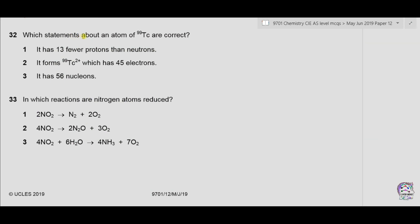Question 32. Which statements about an atom of technetium 99 are correct? The atomic number of technetium 99 from periodic table is 43. And the nucleon number is 99. Part 1. It has 13 fewer protons than neutrons. Now, protons are 43. And neutrons will be 99 minus 43, 56 neutrons. If we add 13 in 43, it becomes 56. So therefore, 1 is correct.